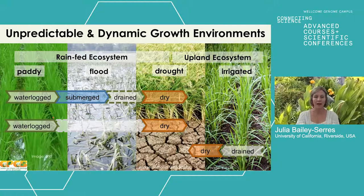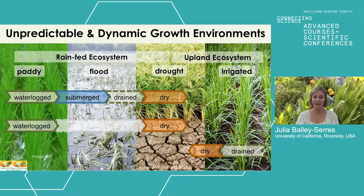Rice grown in a rain-fed ecosystem can oftentimes be submerged because of monsoon rain events that very suddenly and completely put the plants underwater. That submergence event can then progress to a situation where the plant is under water deficit stress. There are also times in the rain-fed ecosystem where the paddy field is drained early, giving the plant an early drought event. Rice has adapted genetic mechanisms to endure waterlogging, temporary submergence — which can be improved by genes such as Sub1A — and developmental adaptations to endure drought.